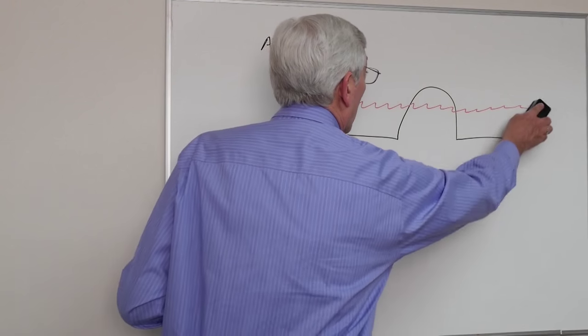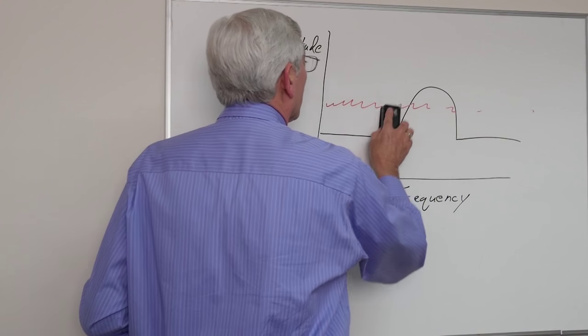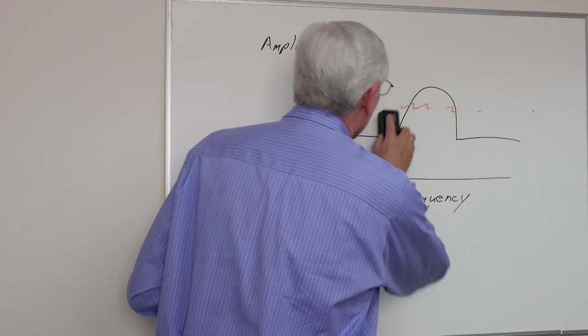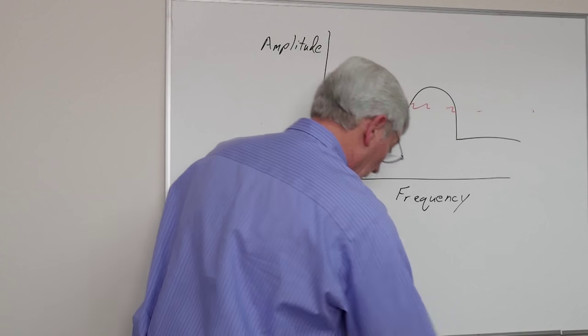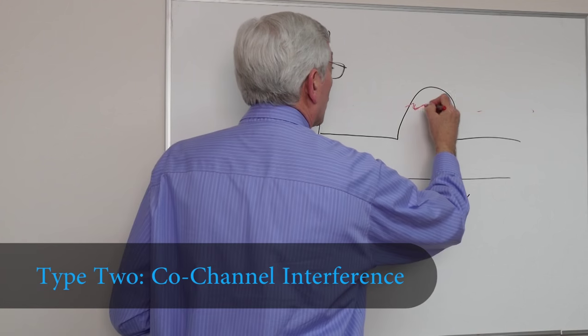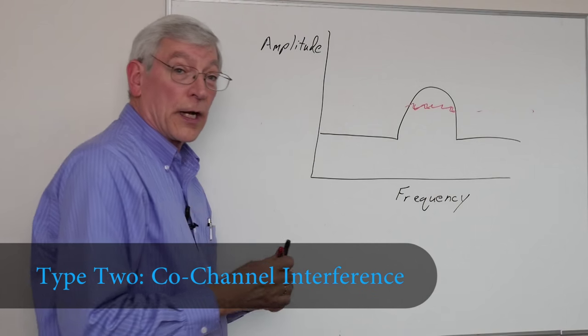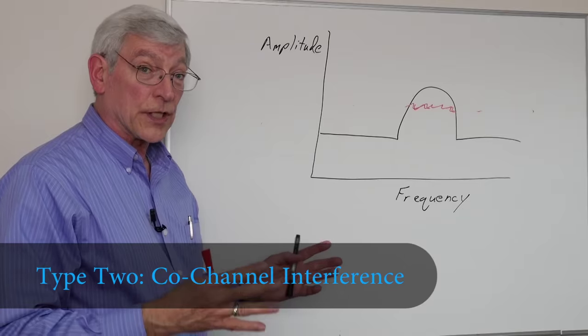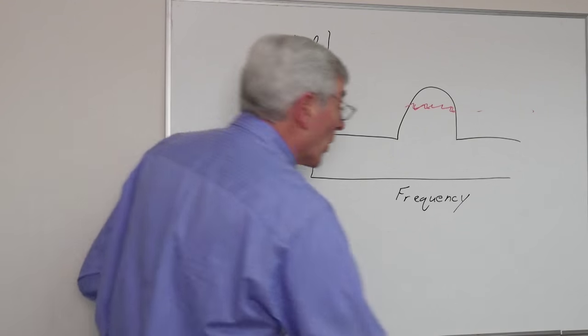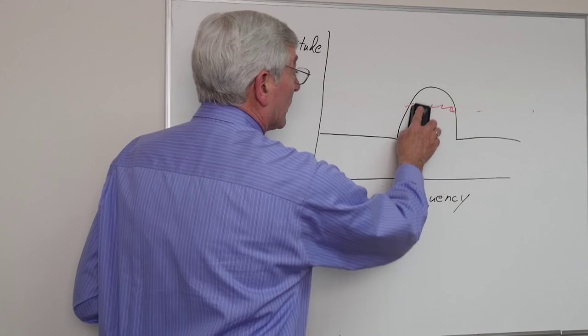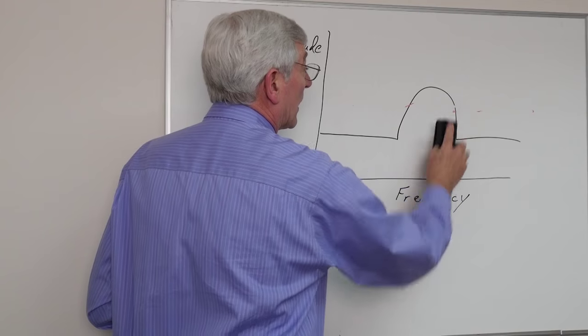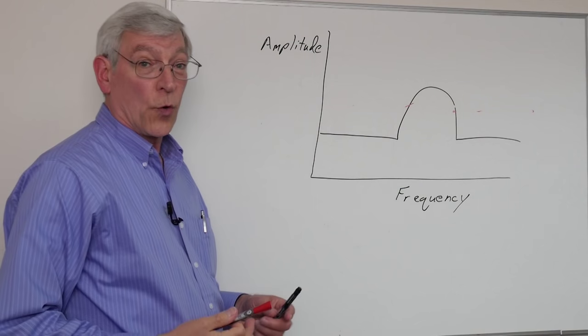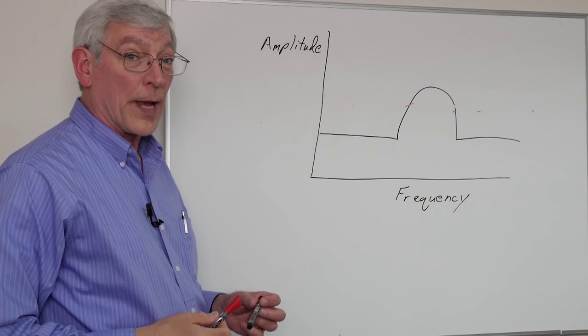Other types of interference we might come into contact with is interference that's only within our band of interest. This is co-channel interference. Co-channel interference is undesired RF information within the receiver band. So that will cause the same thing, the loss of ability for the receiver to decode the 1s and 0s of our real information stream.